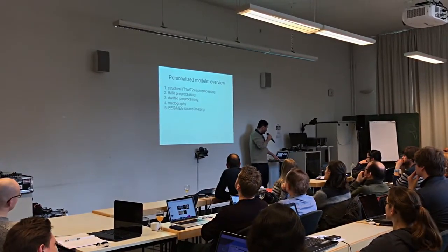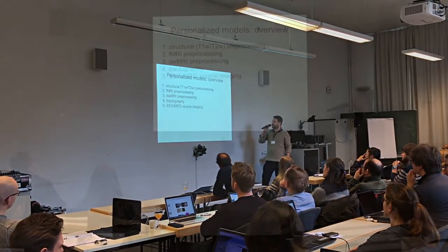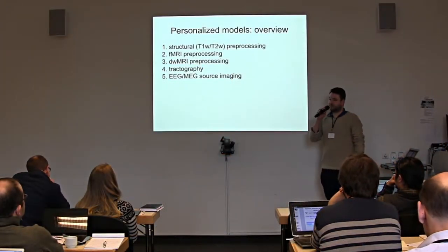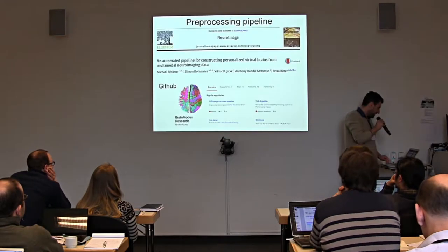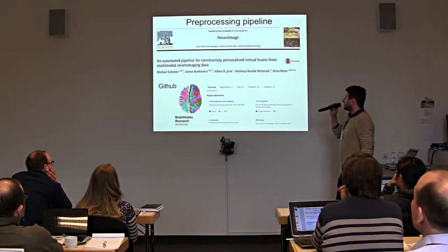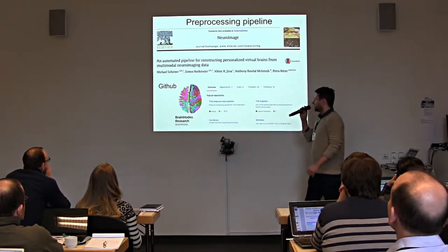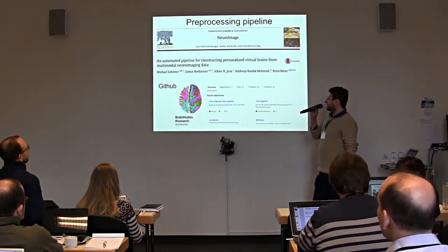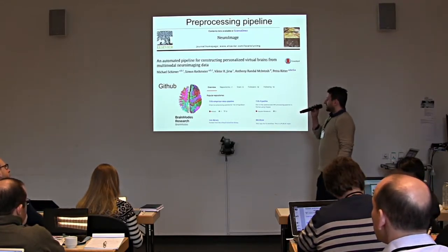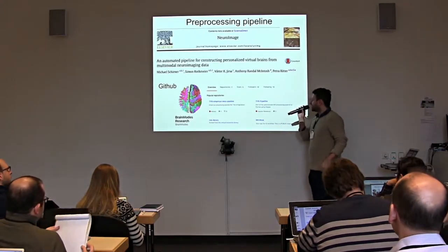Overview of this talk: we'll start with structural pre-processing, go to fMRI pre-processing, diffusion MRI pre-processing, tractography, and wrap up with source imaging. We published a pipeline in 2015 — a set of bash scripts that combine neuroimaging software, taking MRI data as input and generating brain network models as output. We also have a pipeline implementation of that.